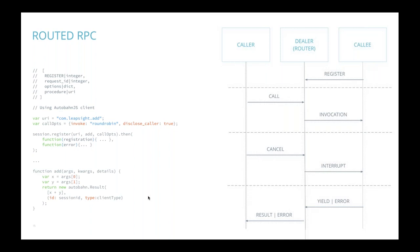In the routed RPC flow: a callee registers a procedure with the router. Once registered, a caller sends a call message to the router. The router analyzes the call, decides which callee implementation to invoke — with load balancing implemented by the dealer — and sends the callee an invocation message. The callee returns a yield or an error. If it's a yield, the router turns that into a result to the original caller. If it's an error, it passes the error along. In-flight, the caller can cancel the RPC, which sends an interrupt message to the callee.